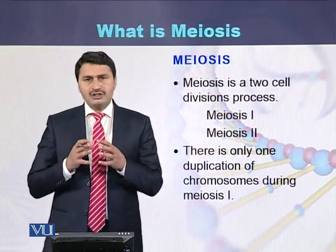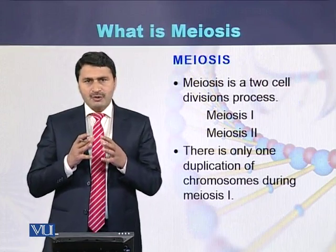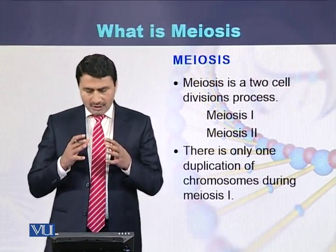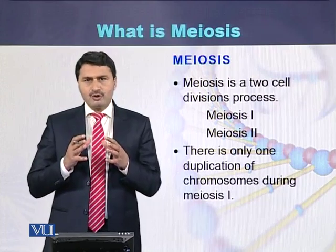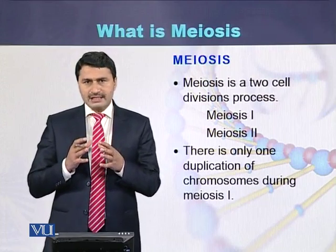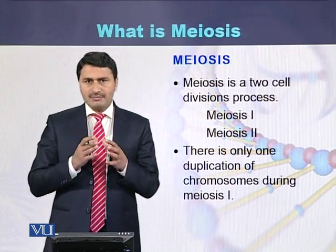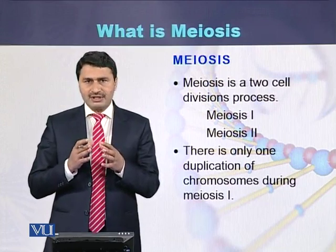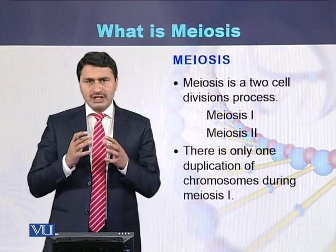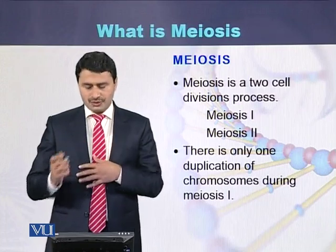Meiosis is a two-step process: meiosis 1 and meiosis 2. There is only one duplication of the chromosomes, which occurs at the start of meiosis 1 during interphase, while in meiosis 2 there is no duplication of the chromosomes.